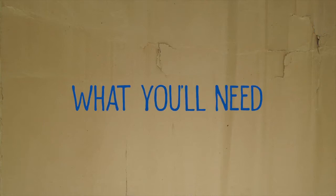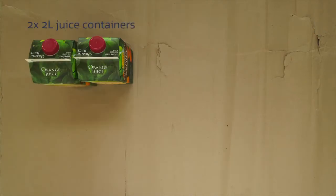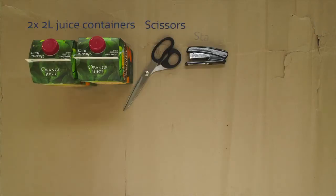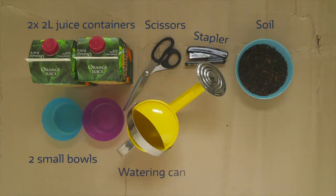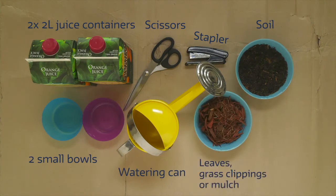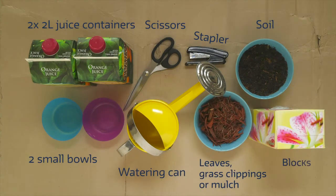The things we will need are two 2-liter juice containers, scissors, stapler, some soil just enough to fill the two containers, two small bowls, watering can, leaves, grass clippings or mulch, and blocks to create slopes.